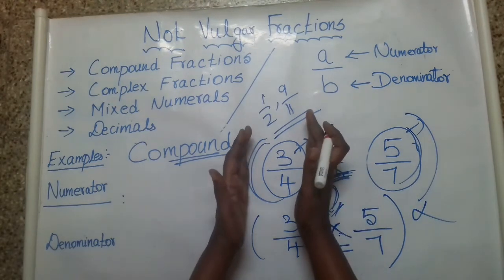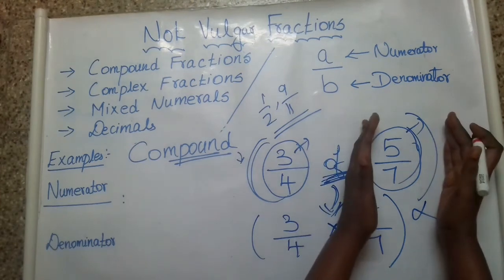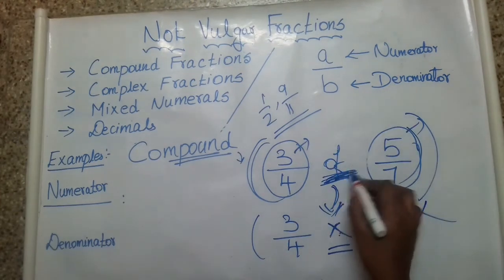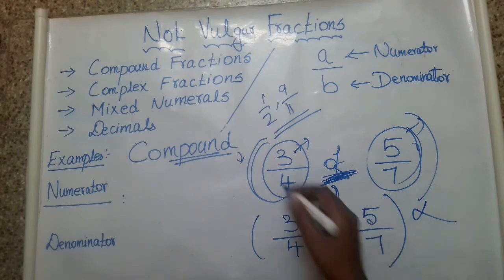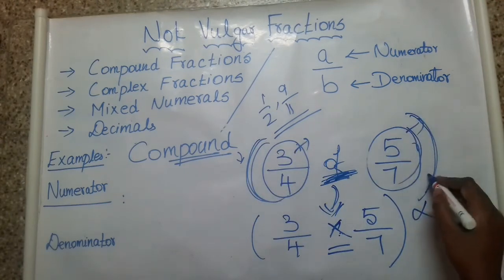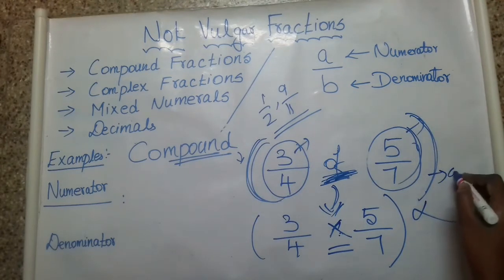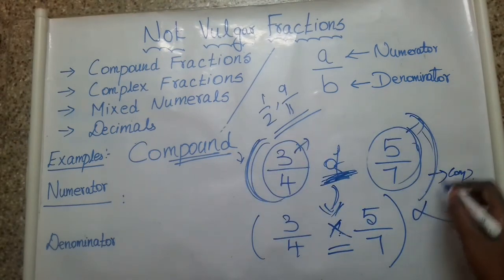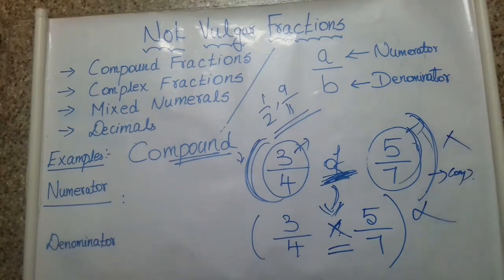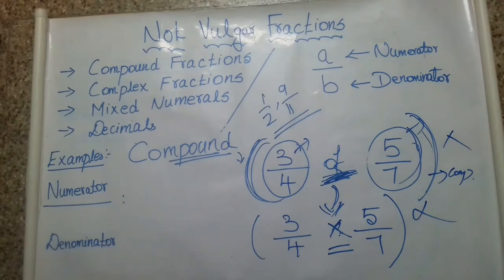If the fractions are separate from each other individually, each one is a vulgar fraction. But when connected with the word 'of,' which means multiplication, the entire thing takes on the compound fraction name. So the entire compound fraction is not a vulgar fraction. Complex fractions are not a vulgar fraction, compound fractions are not a vulgar fraction, and mixed numerals are also not a vulgar fraction.